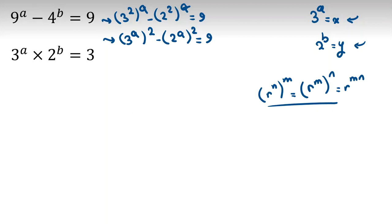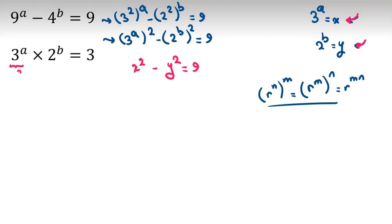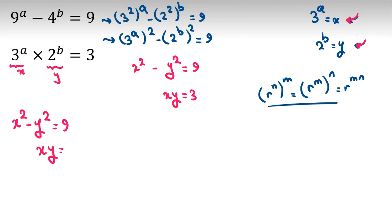I should write B instead of A there — so it is 2 to the B squared. Now using X and Y to replace: 3 to the A is X, 2 to the B is Y, so it is X squared minus Y squared equals 9. And from the second equation, X times Y equals 3. Let's write the equations: X squared minus Y squared equals 9, and X times Y equals 3.